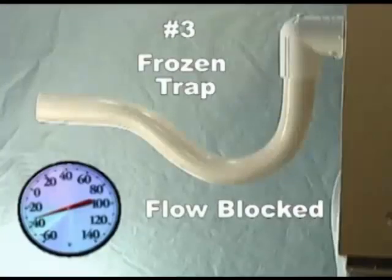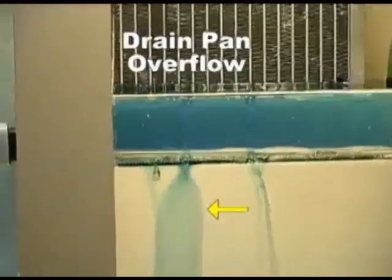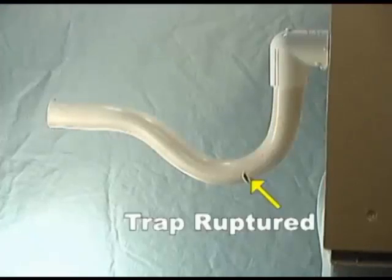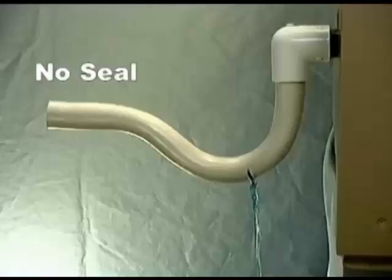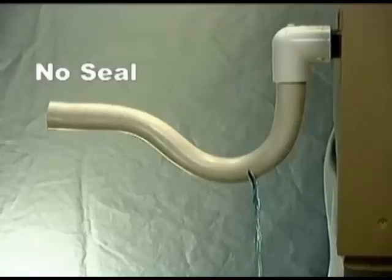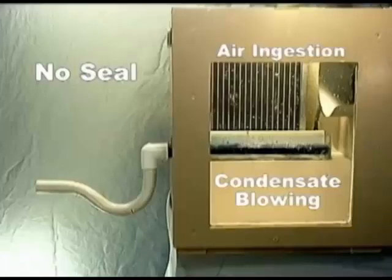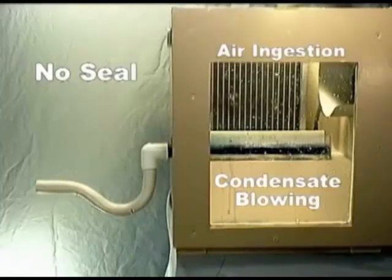Condensate traps exposed to freezing temperatures will block the flow of condensate, causing drain pan overflow. When condensate freezes, the trap is frequently ruptured, as depicted here. Because it cannot retain condensate, there is no seal and it acts like an empty or missing trap. Observe that water leaks from the trap and allows air ingestion and condensate blowing during the cooling operation.